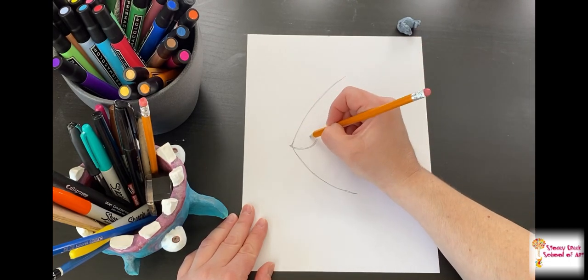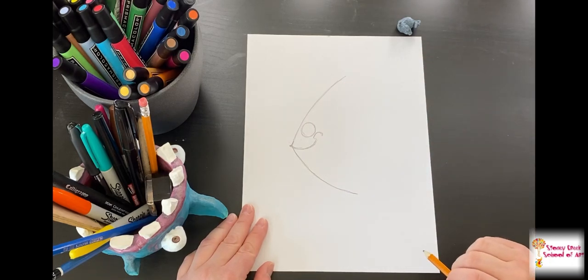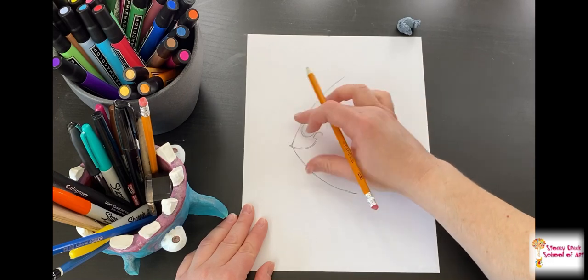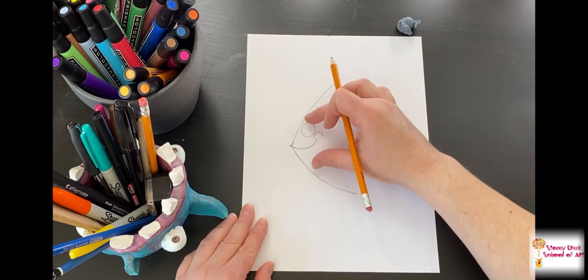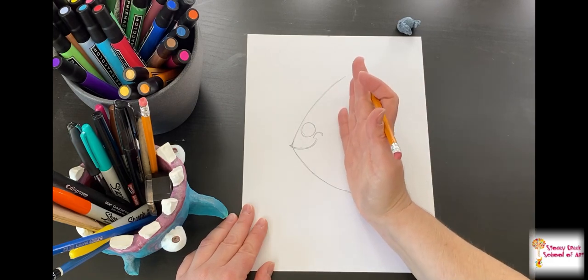I'm going to put his eye in there. This gives me some direction for how thick to make his body. Angelfish don't have really long shark bodies—they're kind of compact.